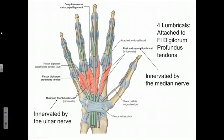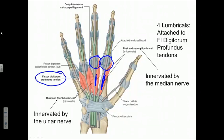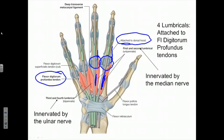Looking at a more detailed picture of the lumbricals, we can see they arise from the tendons of the flexor digitorum profundus on the palmar side. Since they arise on the palmar side, when they cross the metacarpophalangeal joints they act to flex the fingers at those joints, assisting muscles like the flexor digitorum. But once the tendons of each lumbrical sweep around the lateral side of the proximal phalanx, they blend into and attach to the tendons of the extensor digitorum, forming an anatomic structure called the extensor or dorsal hood — an extended portion of each digitorum tendon on that side.